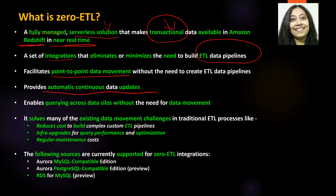Every time there's a change in your source database, that data will be replicated in near real time and made available in Amazon Redshift. Zero ETL also enables querying of data silos without the need for data movement. This is actually federated querying, which is a feature of Amazon Redshift, allowing you to query data in Amazon Redshift along with data in other sources like MySQL or Postgres, without moving data between different data sources.